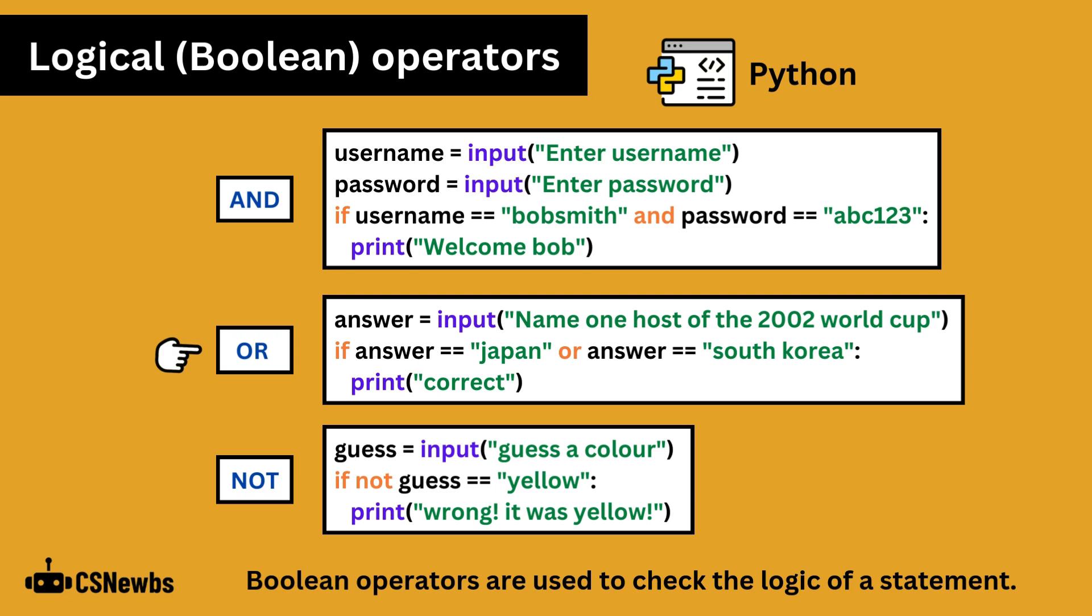It's important to note that even if you are using the same variable, you must write its name out again. If answer equals Japan or South Korea would not be correct. It must be if answer equals Japan or answer equals South Korea.